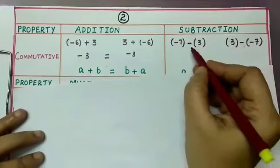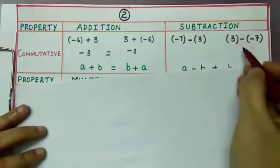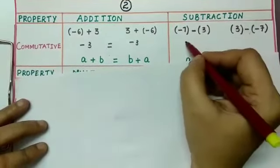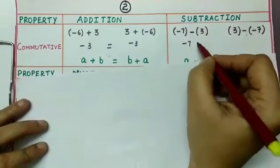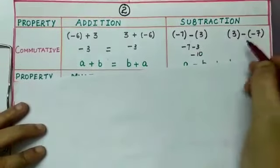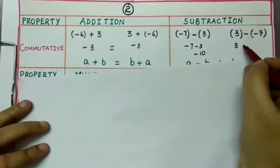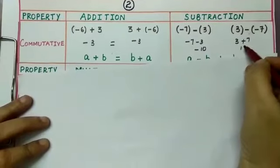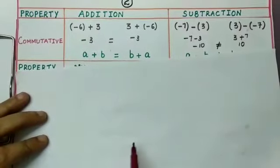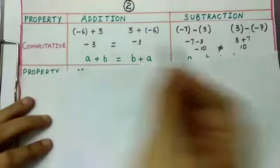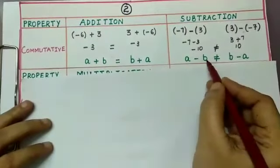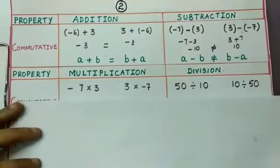Let us check commutativity under subtraction: minus 7 minus 3 equals minus 10. Interchanging: 3 minus minus 7 equals 3 plus 7 equals 10. Since minus 10 is not equal to 10, integers are not commutative under subtraction. Generally, for any two integers a and b, a minus b is not equal to b minus a.